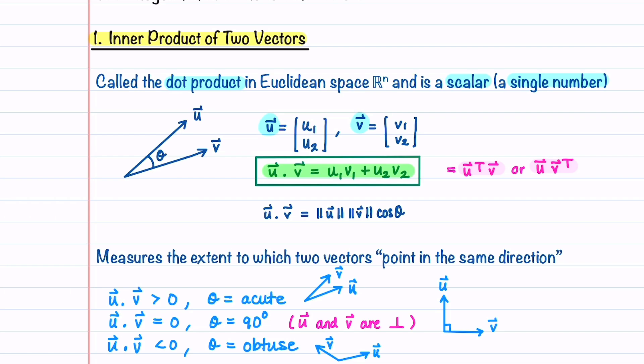We can also write the dot product of u and v in terms of the angle theta between u and v. The dot product is just the magnitude of u times the magnitude of v times the cosine of the angle between them.